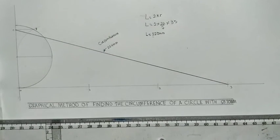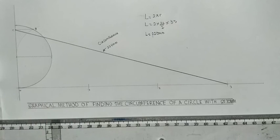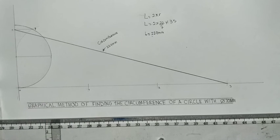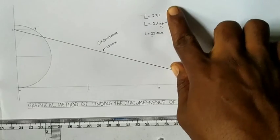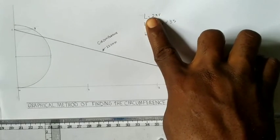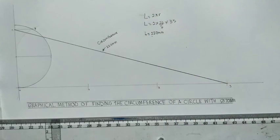So this is how you find graphically the circumference of a circle, the length. And we use calculation to verify it, because the length of the circle is equal to 2 pi r. Thank you very much for watching.